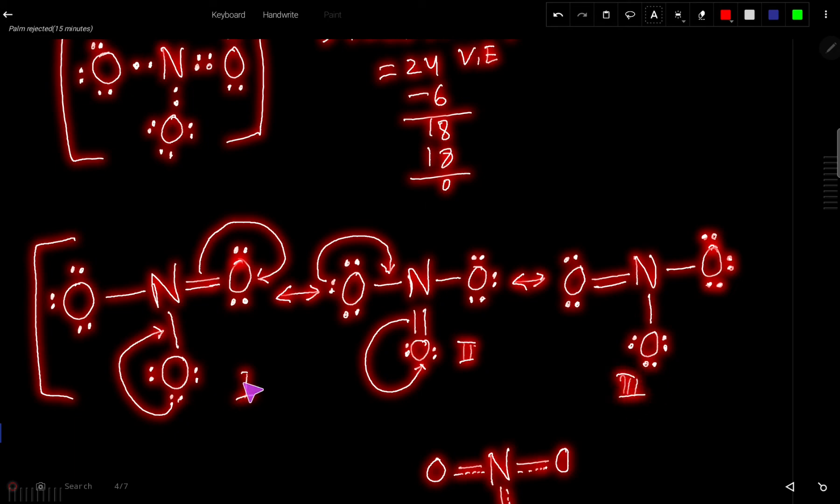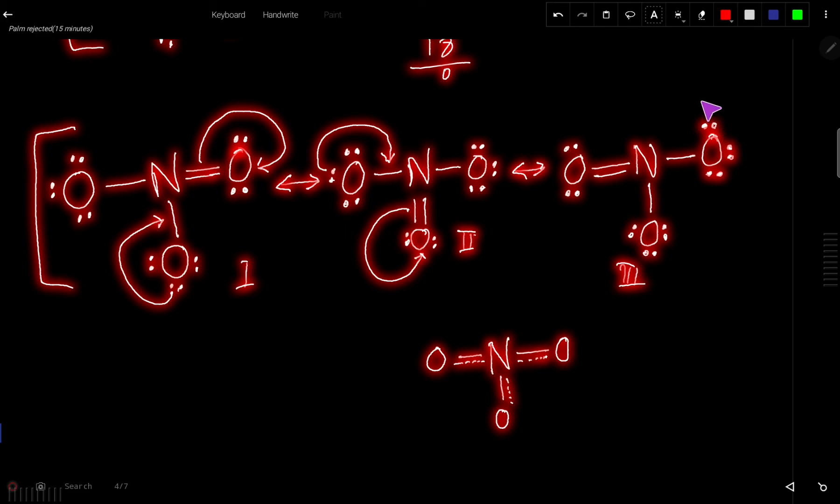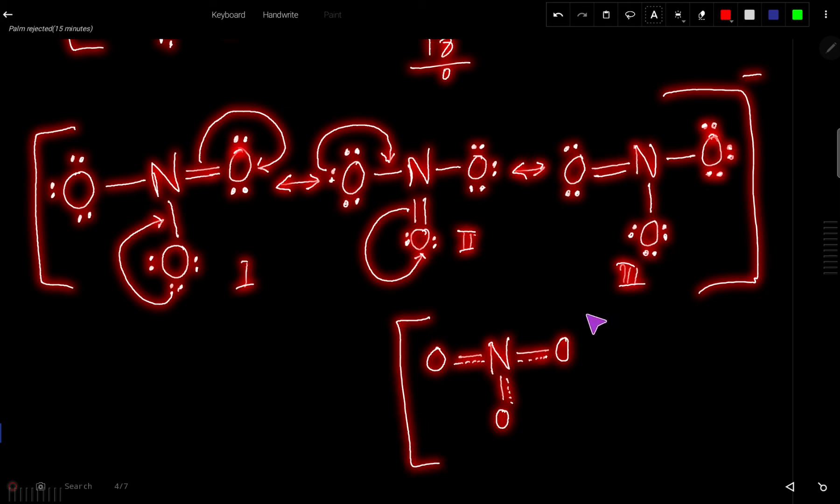So one, two, three are the probable Lewis structures of NO3 minus. But actual structure is the hybrid structure of this three. So double bond may, double bond is forming with this oxygen, this oxygen or this oxygen. Actually, this is the hybrid structure of NO3 minus.